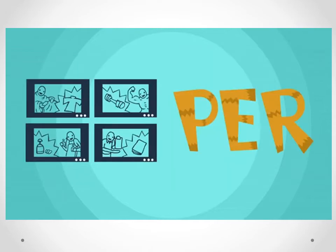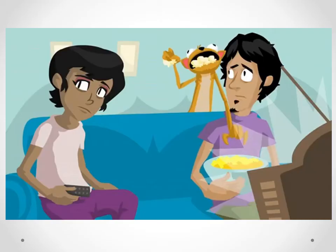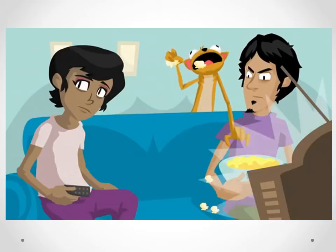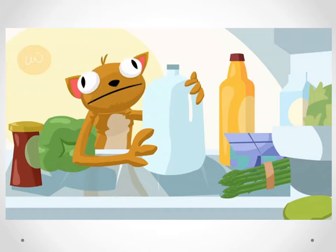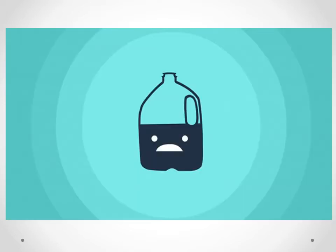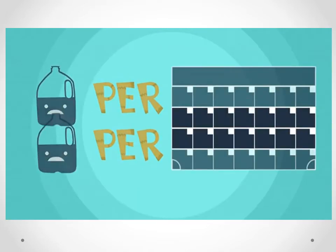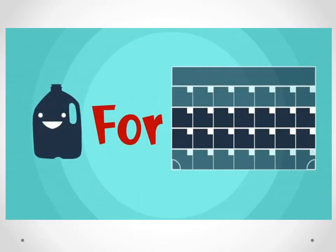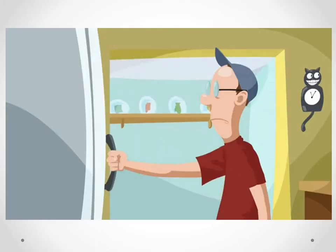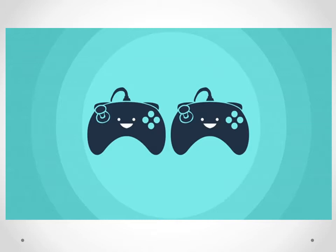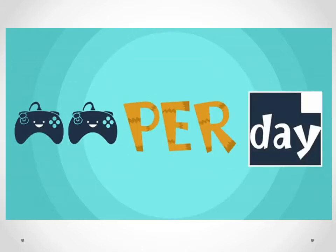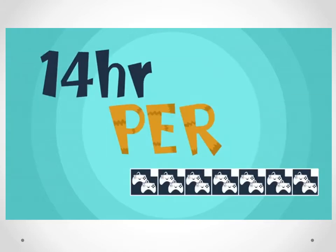Four commercials per commercial break. Half a gallon of milk per week — that's one gallon of milk every two weeks. Two hours of gameplay per day — that's 14 hours per week.